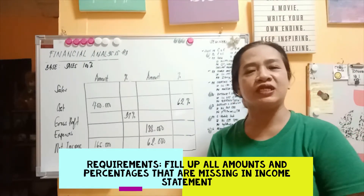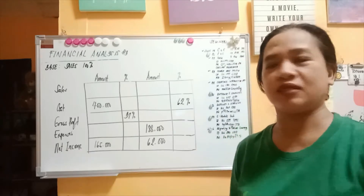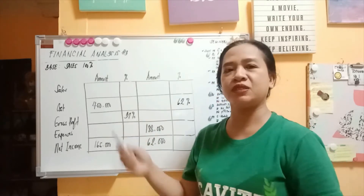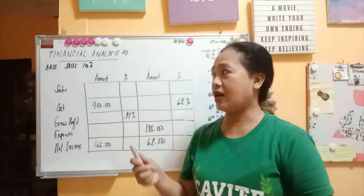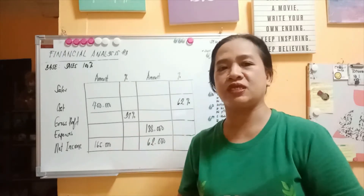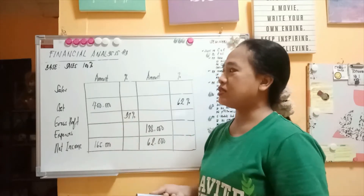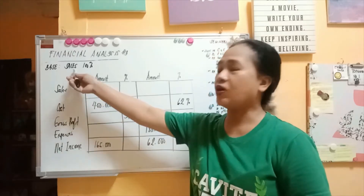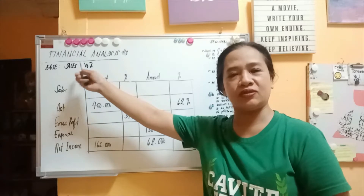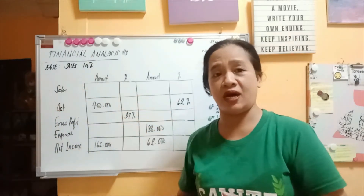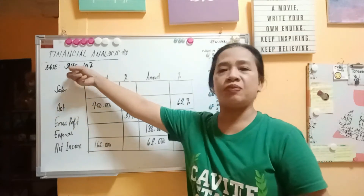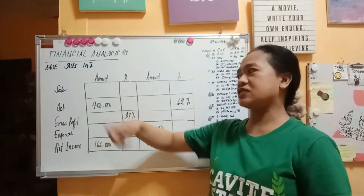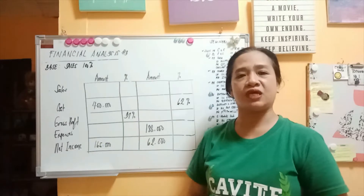Financial analysis number three is more on income statement. When you say income statement or statement of operation, we are dealing with either sales, revenue, or service income. Here our example is sales. Just remember that in income statement, the base percentage is always the sales. In balance sheet, the base is the asset, but here the base is the sales. Wherever you have a problem regarding computation, you just start with the sales — sales is always 100%.